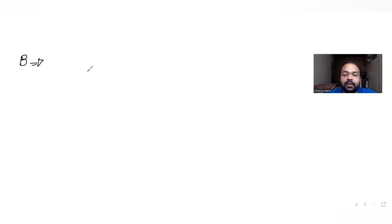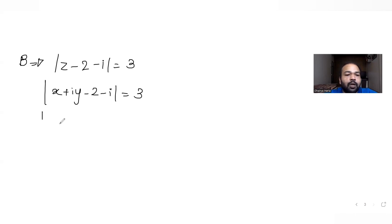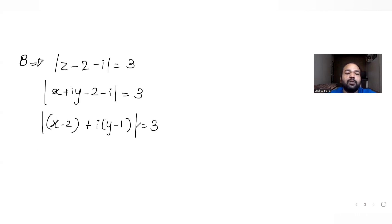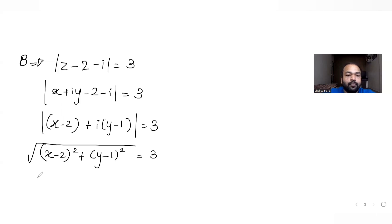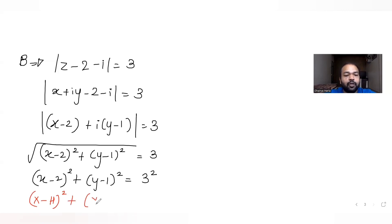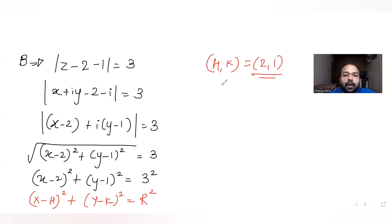For region B, it tells us mod(z minus 2 minus i) equals 3. Substituting z = x + iy, we get mod((x minus 2) plus i(y minus 1)) equals 3. Taking the modulus, that is root of (x minus 2) squared plus (y minus 1) squared equals 3. Squaring both sides gives (x minus 2) squared plus (y minus 1) squared equals 9. So the center is (2, 1) and the radius is 3.